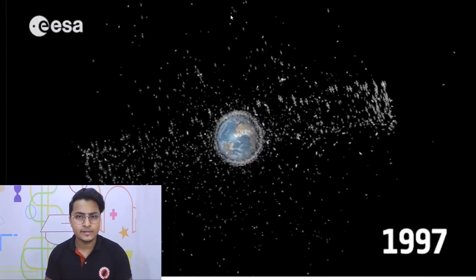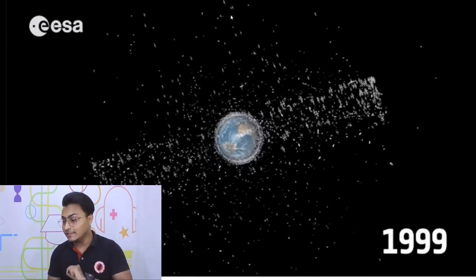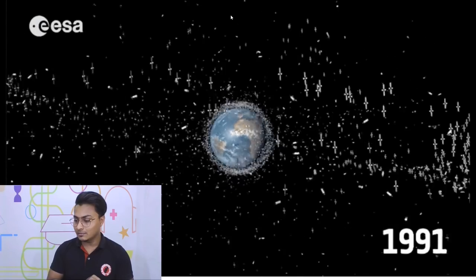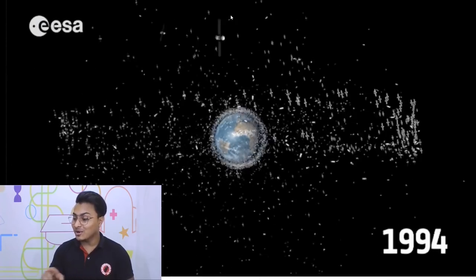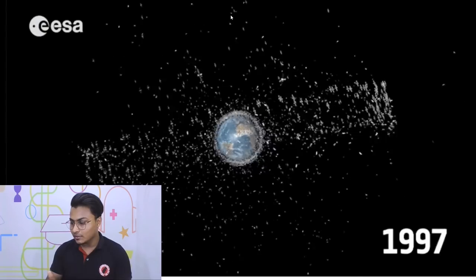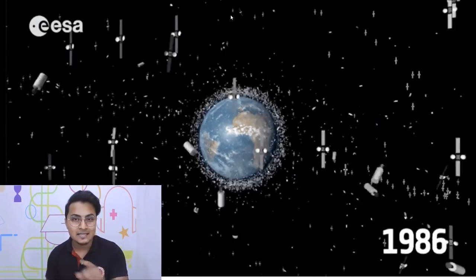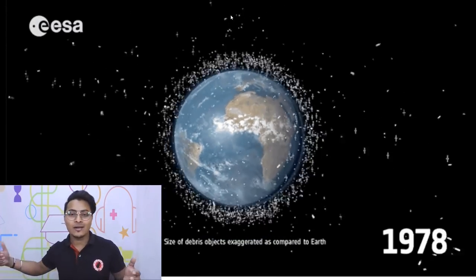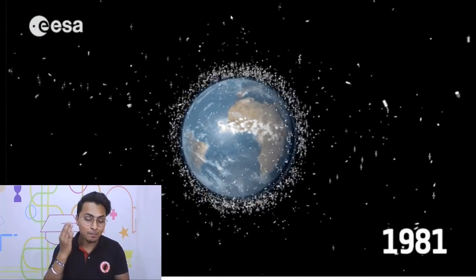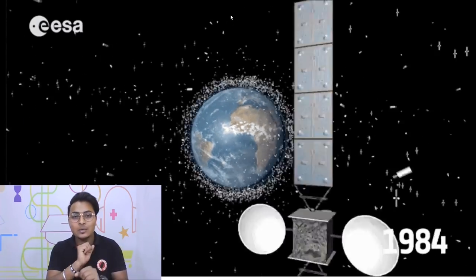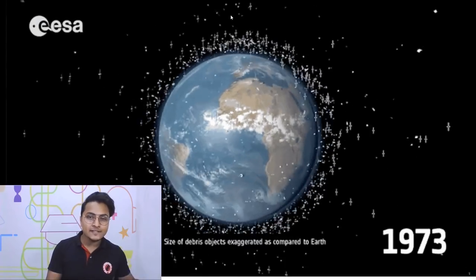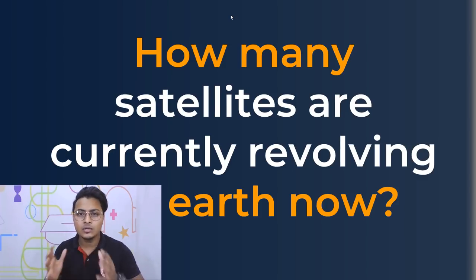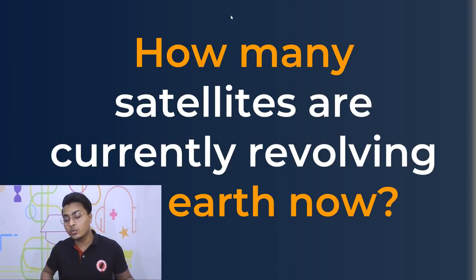Why does it all start from 1957? The answer is the launch of Sputnik — the first ever satellite in the entire world happened in 1957, and from there on we have been continuously sending things into space. From 1957 to 2018 is about 61 years — so how many satellites are now revolving around the Earth?